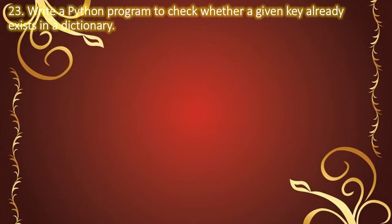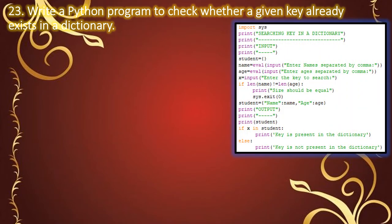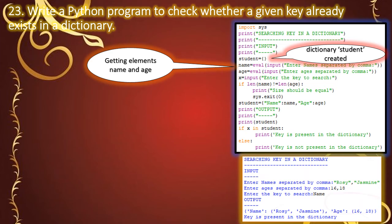Next, you can check whether a given key is present in the dictionary. We create the student dictionary with name and age values. We store the key to search in variable x. Here, we search for the key 'name'.